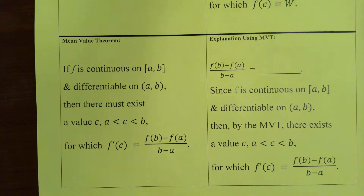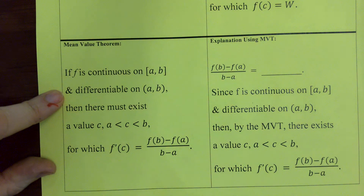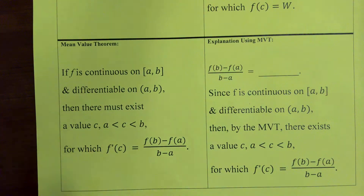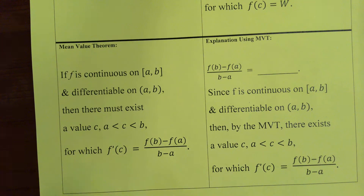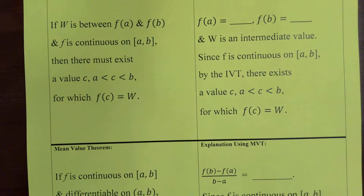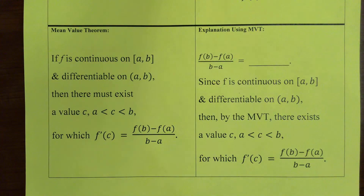The mean value theorem: if F is continuous on the closed interval AB and differentiable on the open interval AB, then there must exist a value C between A and B for which F prime of C is equal to F of B minus F of A over B minus A. The intermediate value theorem is how you explain that the function itself achieves a certain output, but the mean value theorem is how you explain that the derivative — the slope of the tangent line — achieves a certain value.